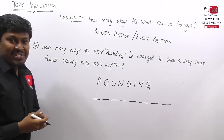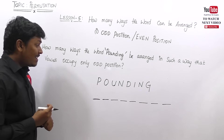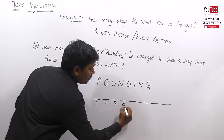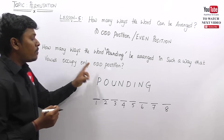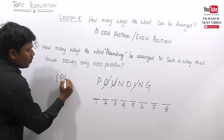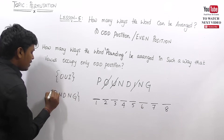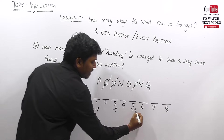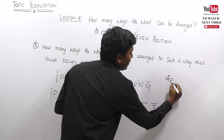Question number three: how many ways can the word POUNDING be arranged such that vowels should always occupy only odd positions? The word P-O-U-N-D-I-N-G has eight letters. The vowels are O, U, and I — three vowels. The remaining consonants are P, N, D, N, G. The odd positions are one, three, five, and seven — four odd positions — so we place three vowels in four spots: 4P3.